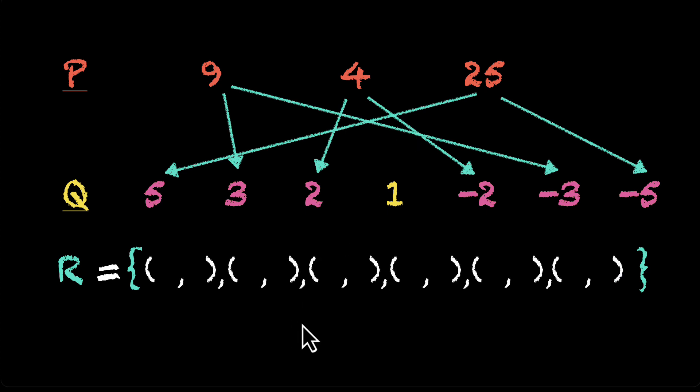And what are they? We have 9 and 3. We have 9 and minus 3. We have 4 and 2. We have 4 and minus 2. We have 25 and 5. And finally, we have 25 and minus 5.